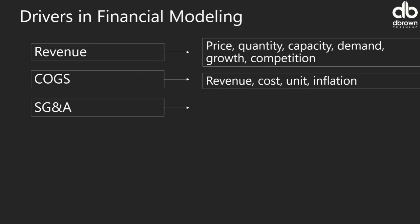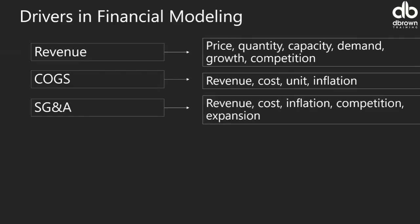Now let's talk about SG&A — selling, general and administrative expenses, also called operational expenses. You can also use revenue as the driver, since it's like the umbrella of the business and almost all income statement line items can be set as a percentage of revenue. Where you can list all operational costs, you can also use cost directly. Factor in inflation for time value of money, and consider competition and expansion — when a firm is expanding, operational expenses are expected to increase.